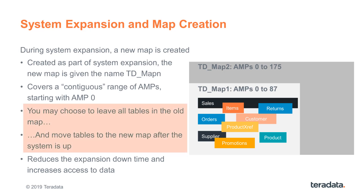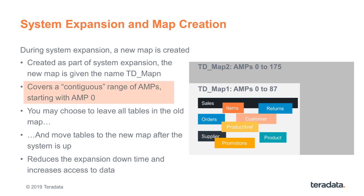You have the choice when you expand your system whether or not to move the individual tables into that new hash map or to leave them in the old hash map. TD map one, your original hash map, covers the old AMPs — AMP 0 through 87 in this case. After the reconfig, you've got more AMPs, and TD map two will cover all of the AMPs, the old ones and the new ones. We call these types of maps contiguous maps because they cover a contiguous range of AMPs always starting with AMP 0.